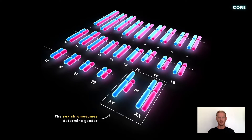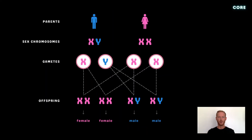One pair of chromosomes, called the sex chromosomes, determines your gender. In females, the two sex chromosomes are referred to as X chromosomes, while males possess one X and one Y. This means that every ovum produced receives an X chromosome, while sperm cells may contain either an X or a Y. If a sperm cell carrying an X chromosome fertilises the ovum, the zygote will be XX and will develop into a female. If a Y sperm fertilises the egg, the zygote will be XY and will develop into a male.